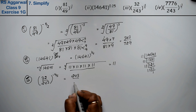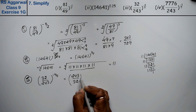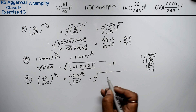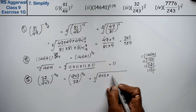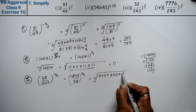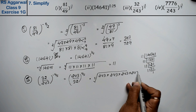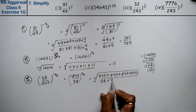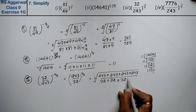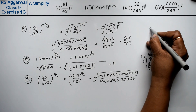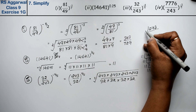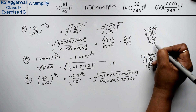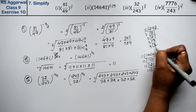Taking reciprocal: 243 upon 32 to the power 4 upon 5. The power 4/5 means 5th root then raise to 4. So we expand: 243 × 243 × 243 × 243 upon 32 × 32 × 32 × 32. Now factoring 243: 3 × 27, 3 × 9, 3 × 3 — that's 5 threes.